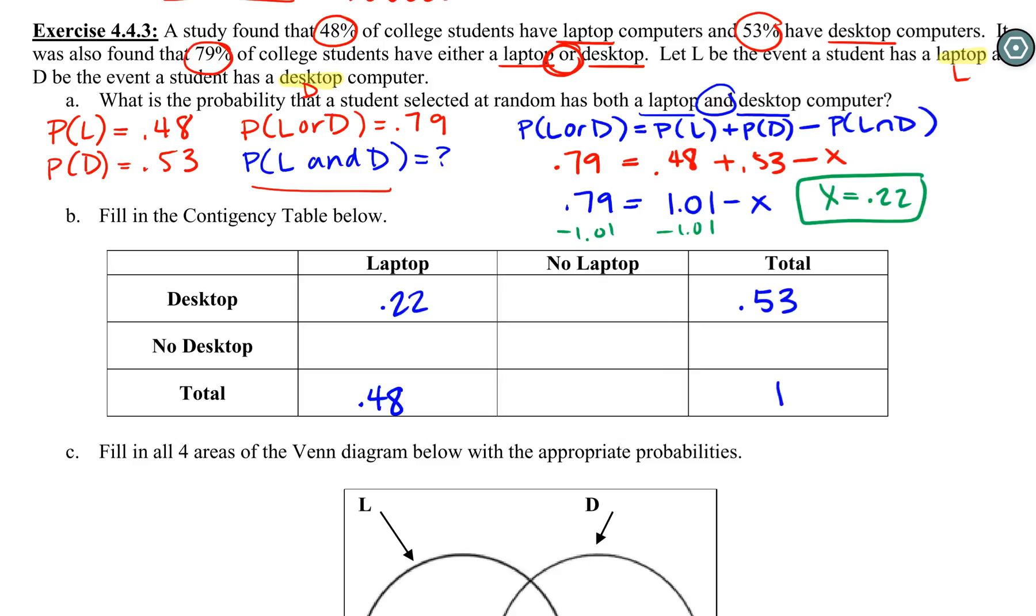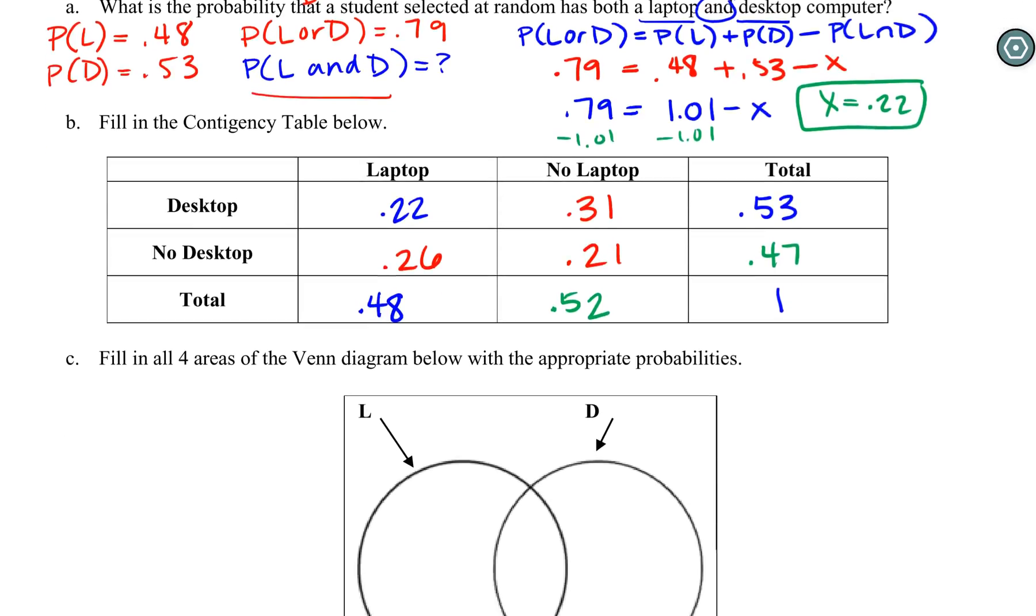Then we can fill in everything else—everything has to sum down the rows and columns. We can fill in those values here and then we've got everything. Double check everything sums, works, we're good.